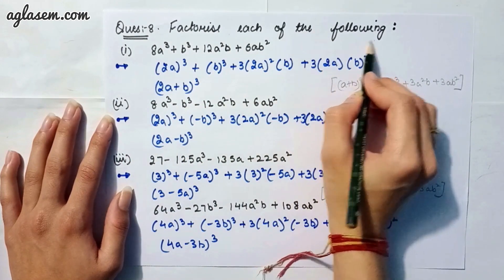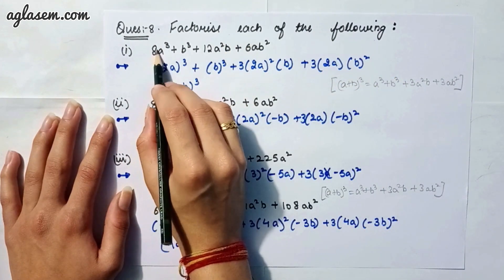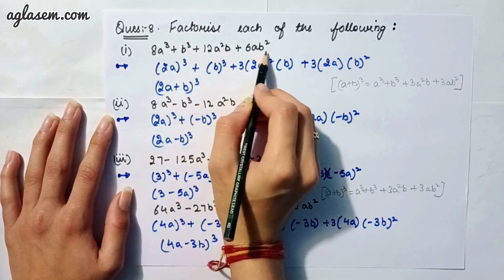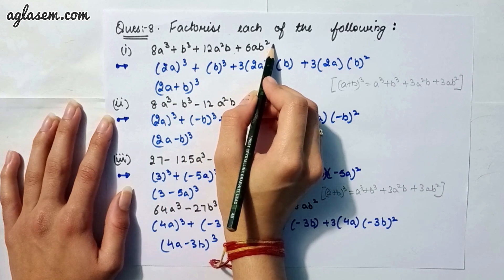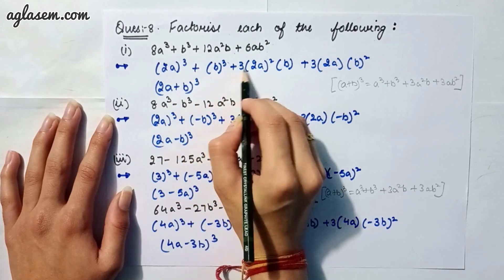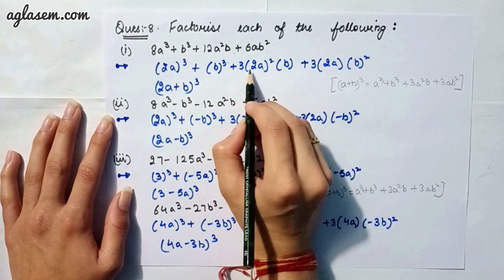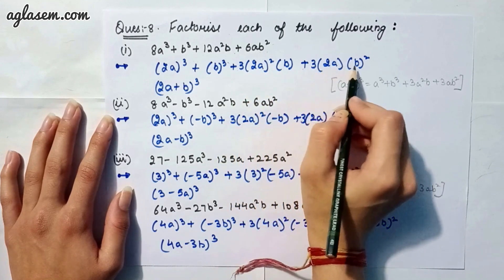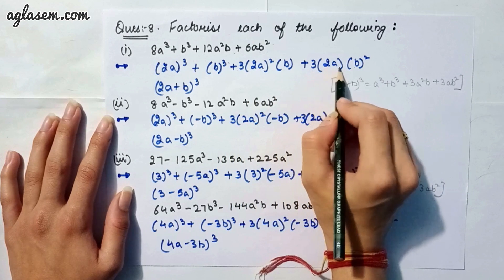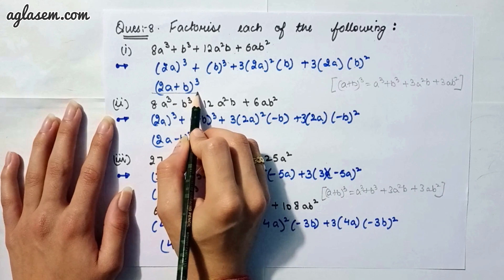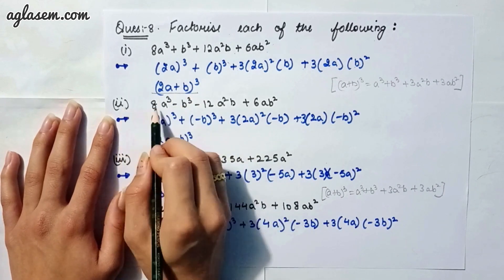Moving to our eighth question: factorize each of the following. Part 1 says 8a³ + b³ + 12a²b + 6ab². Applying the identity (a + b)³ = a³ + b³ + 3a²b + 3ab², we recognize a = 2a and b = b, giving the answer (2a + b)³.